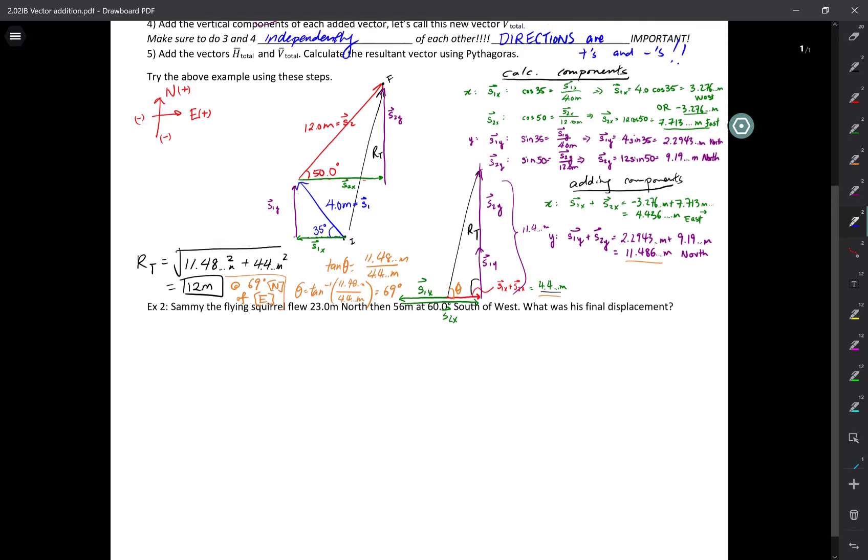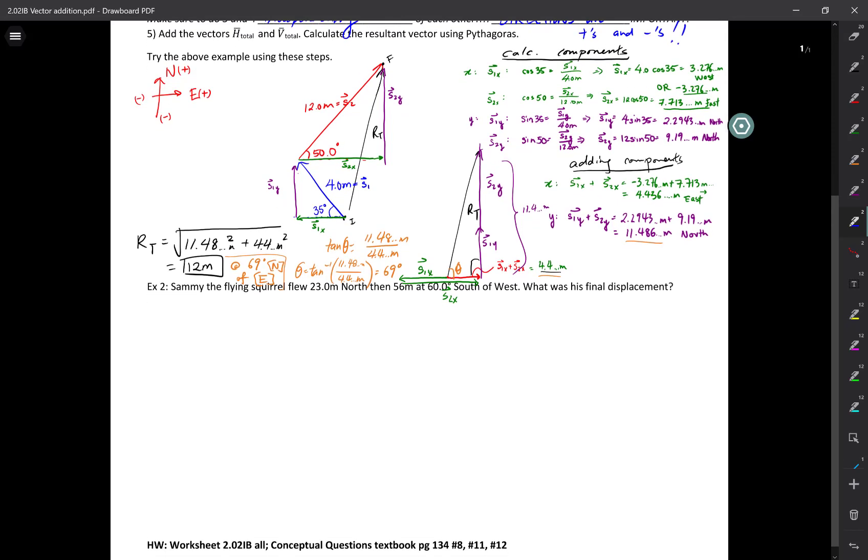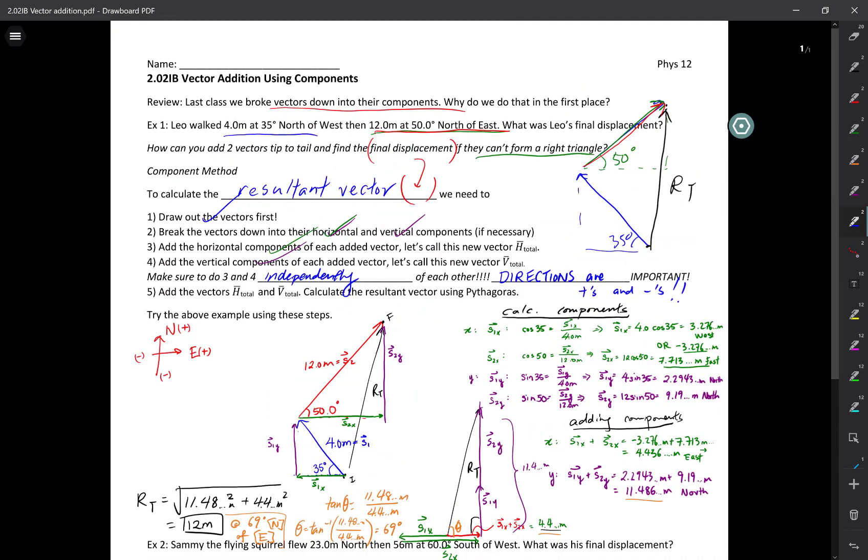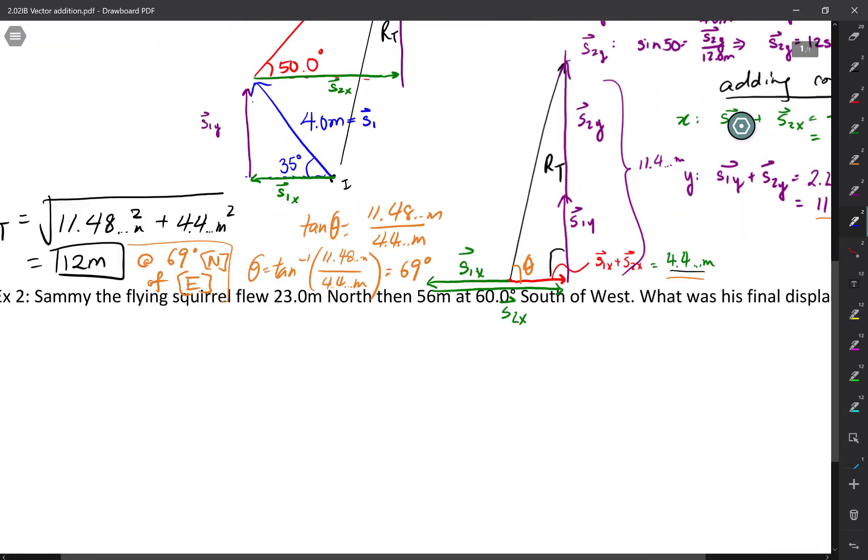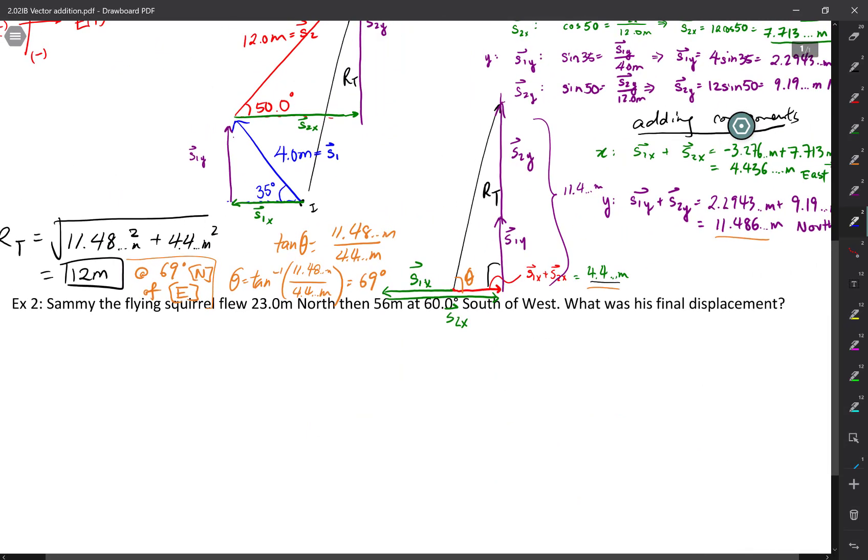In the previous example, I have broken things down step by step to a certain level of detail. But in this question, I will go a little faster. I might even skip a few steps in between. So if you want an example where I go over everything carefully and in more detail, please go back to the previous parts of this video, part one and part two of 2.02 vector addition. Otherwise, you can stay on the line and we'll go over this one very quickly. Sammy the Squirrel. He flew 23 meters north.